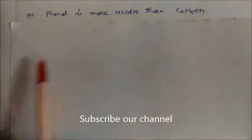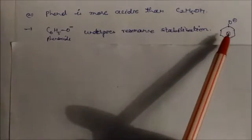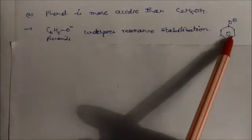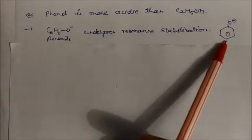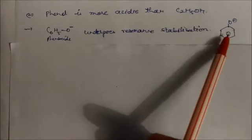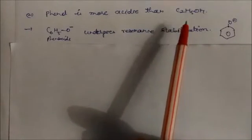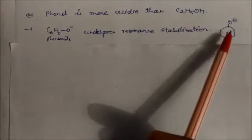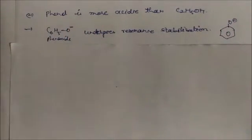Phenol is more acidic than ethanol. If you remove hydrogen from phenol, it becomes phenoxide. This phenoxide undergoes resonance stabilization and is stabilized by the ring. That's why phenol is more acidic, which is absent in ethanol. Phenol is more acidic because of the stabilization of the phenoxide ion.